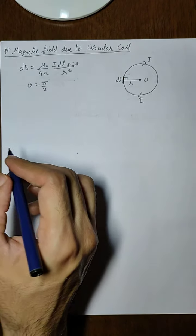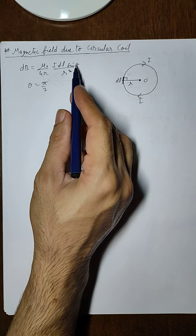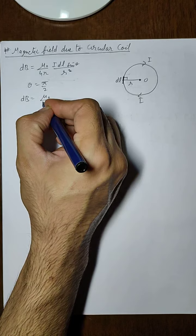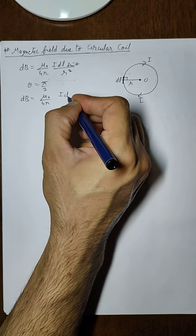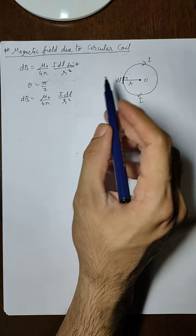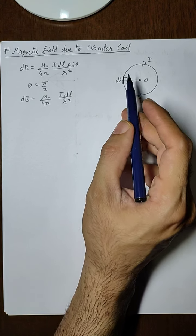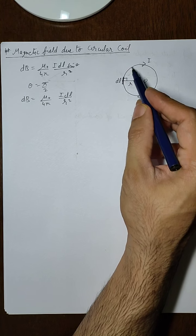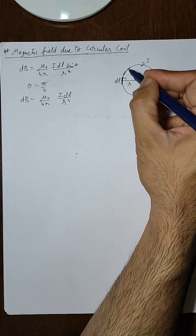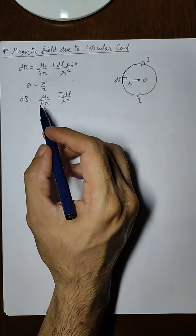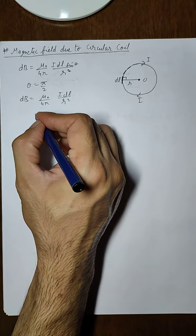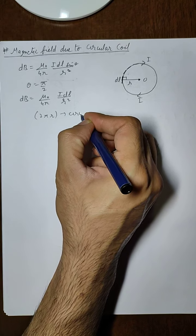Since θ = π/2, sinθ = 1, so dB becomes μ₀/4π · (i dl)/r². This is the magnetic field due to the small length element dl. To find the magnetic field due to the entire coil, we integrate over all dl elements along the circumference. There will be several dl elements along the circumference, and the circumference of the loop equals 2πr.